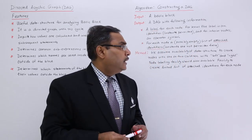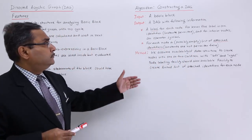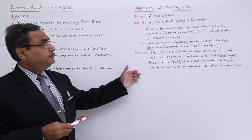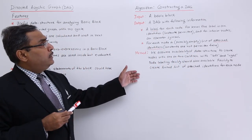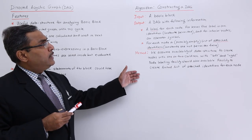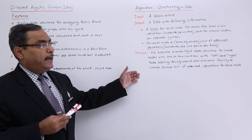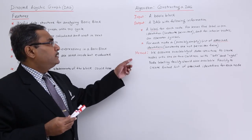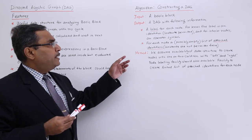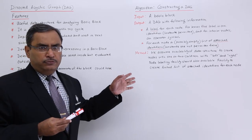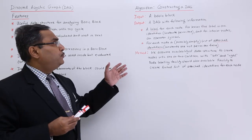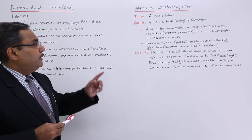So those are the features. Now let us go for the algorithm for constructing a DAG. The algorithm is mainly having three sections: input, output, and the method.